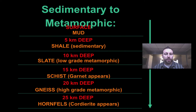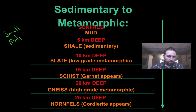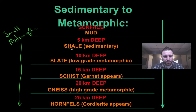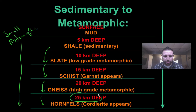Looking at the sedimentary to metamorphic progression: at shallow depths we have a small amount of metamorphism, and as we go deeper there is more and more. Typical mud — clays and silts — pile up to form shale, a sedimentary rock. Once we subject shale to metamorphism, it turns into slate. With higher-grade metamorphism as we go deeper into the earth, further transformations occur.